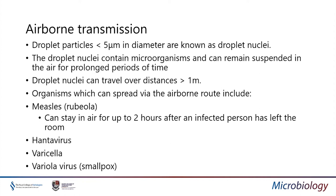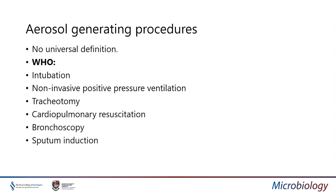Airborne transmission involves droplet particles smaller than 5 micrometres in diameter, known as droplet nuclei. These contain microorganisms and can remain suspended in the air for prolonged periods, travelling vast distances over one metre. It tends to be viruses that can be transmitted airborne — measles can stay in the air for up to two hours after an infected person has left the room — as well as Hantavirus, varicella and the variola virus. We also have to consider aerosol generating procedures which might spread infection.